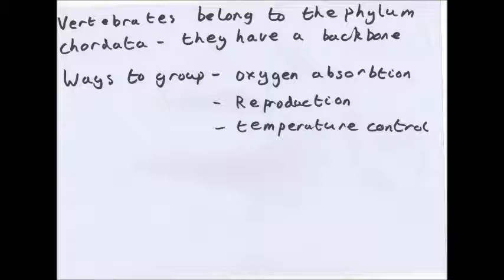To group these organisms, we look at oxygen absorption — do they use lungs or gills? Reproduction — do they use internal fertilisation, as mammals, birds and reptiles do, or external fertilisation, where eggs are released and fertilised outside the body? And temperature control — are they homeotherms, able to control their own temperature? Reptiles and amphibians can't, but mammals and birds can.